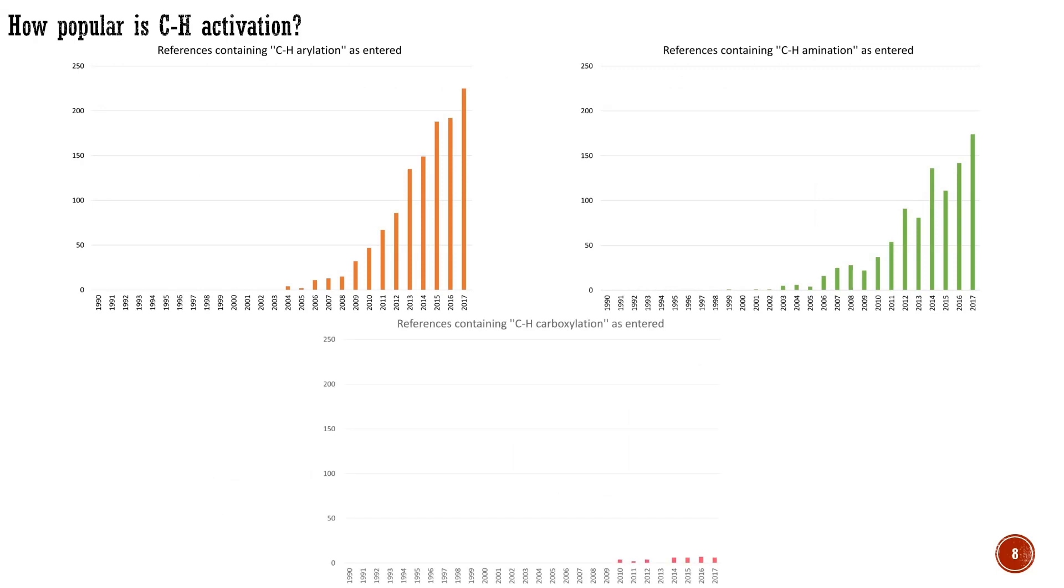Some C-H transformations are quite popular, while others are not. For instance, in 2017, the number of papers on C-H arylation was almost 250. On C-H amination, we had about 200 papers, while works on C-H carboxylation were around 10.